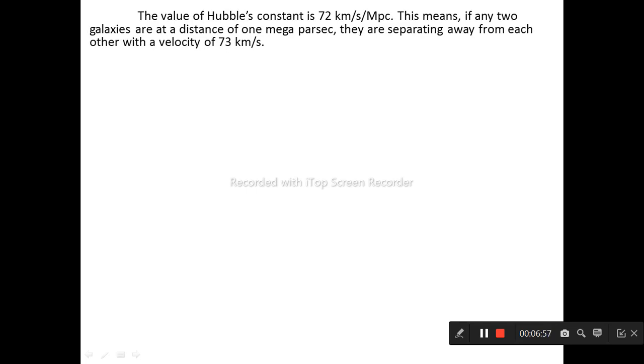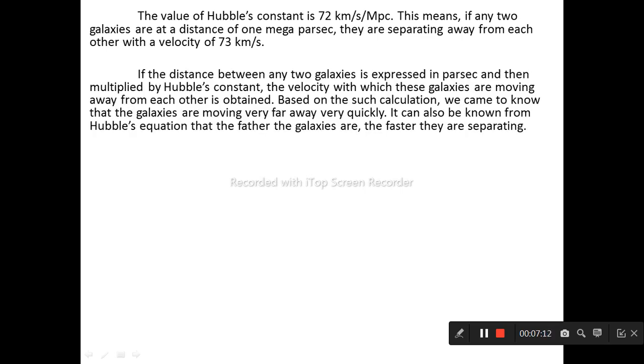The value of Hubble's constant is 72 km/s per megaparsec. This means if any two galaxies are at a distance of one megaparsec, they are separating away from each other with a velocity of 72 km/s. If the distance between any two galaxies is expressed in megaparsec and then multiplied by Hubble's constant, the velocity with which these galaxies are moving away from each other is obtained. Based on such calculations, we came to know that the galaxies are moving far away very quickly. It can also be known from Hubble's equation that the farther the galaxies are, the faster they are separating.